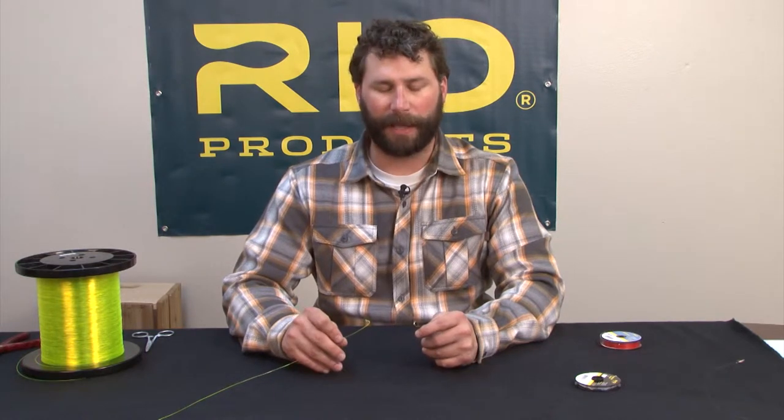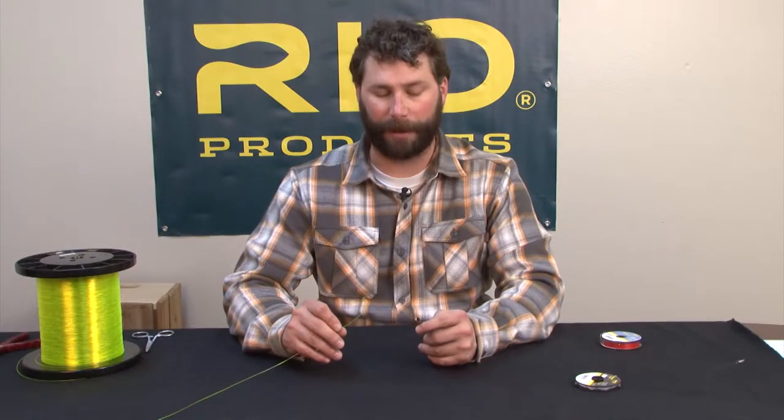The next knot we're going to tie is the improved clinch. It's very similar to the clinch knot, but in this instance we're going to lock the tag in to prevent it from slipping out.